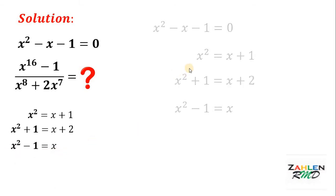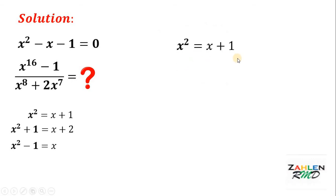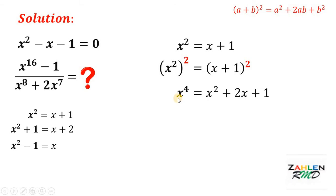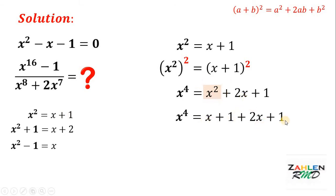Starting with x squared equals x plus 1, we square both sides. Using the identity (a plus b) squared equals a squared plus 2ab plus b squared, the right-hand side becomes x squared plus 2x plus 1, and the left side is x to the fourth power. We substitute x squared with x plus 1, then combine like terms to get x to the fourth power equals 3x plus 2.